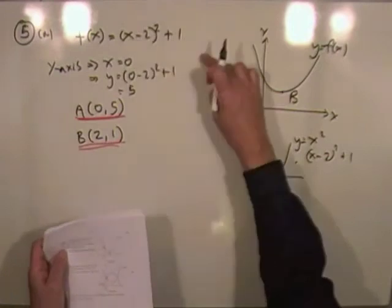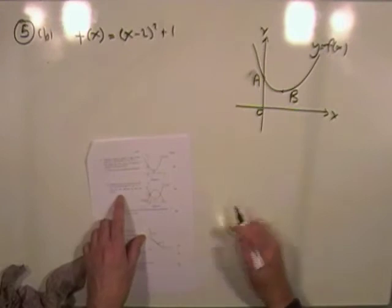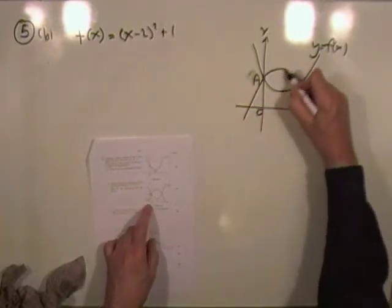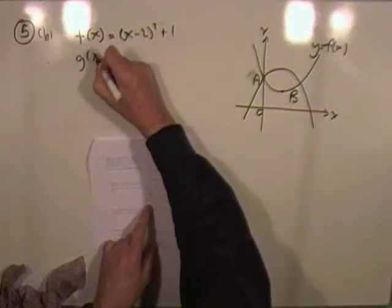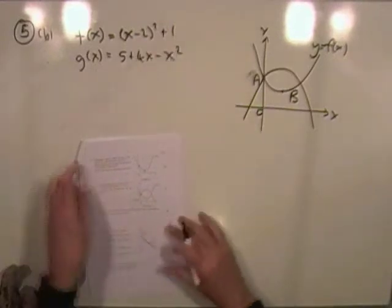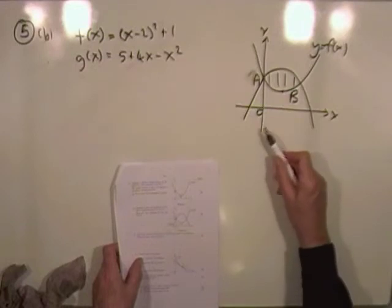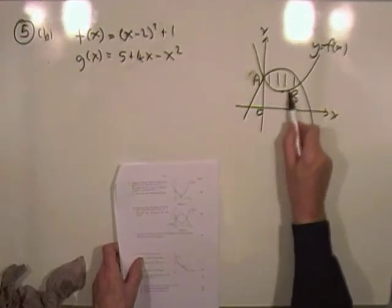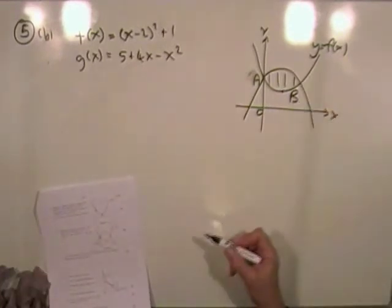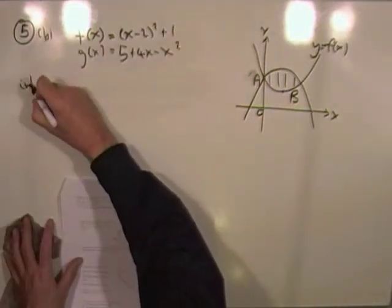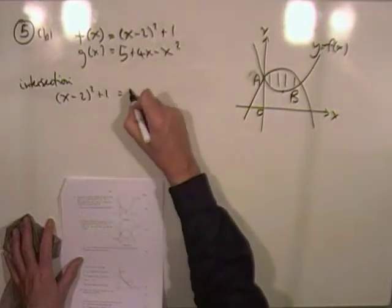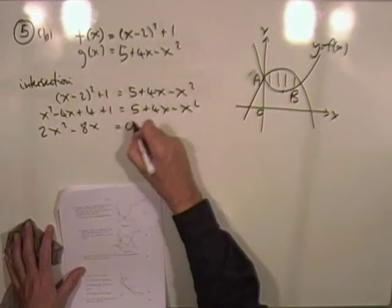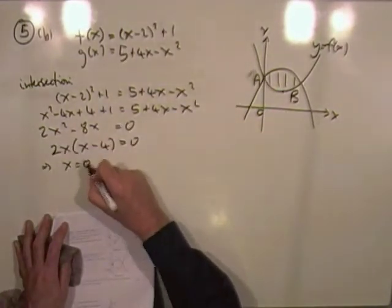Part b shows the graph of f(x) and g(x) = 5 + 4x − x², and asks for the area enclosed between them. First find the intersection points by setting f(x) equal to g(x). Bringing everything to one side gives 2x² − 8x = 0, factoring out 2x leaves x(x − 4) = 0, so x equals zero or four, meaning A is at zero and B is at four.